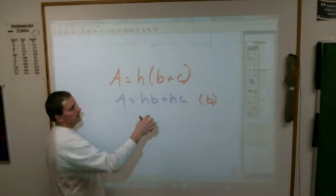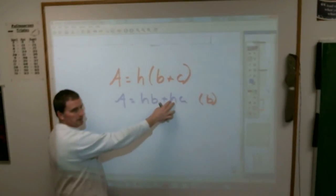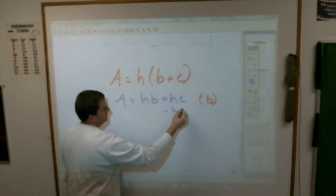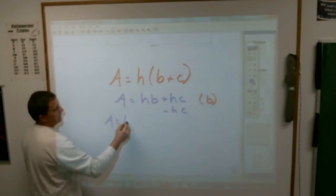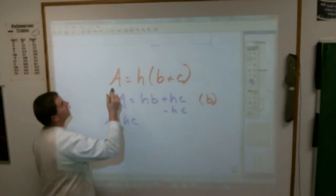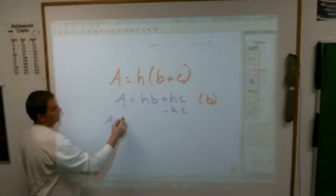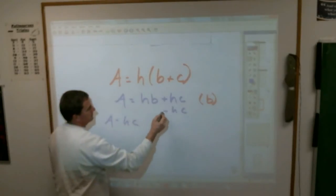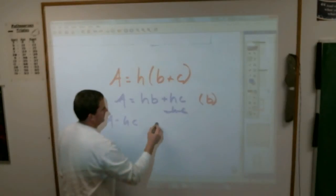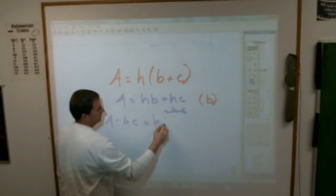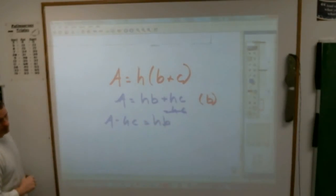Yeah, get rid of this first. Oh, subtract. You're going to subtract HC. So now you have A minus HC. Sorry, that was not equal. A minus HC equals HB.